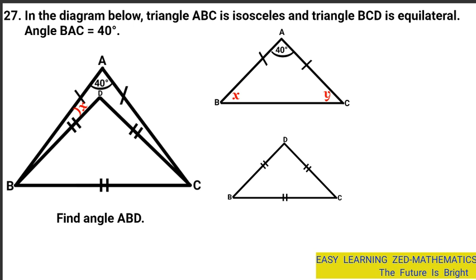In an isosceles triangle, two angles are equal. So in our case, angle X and angle Y are equal. Therefore, we can call them both X. Angle ABC is named X, and angle BCA is also called X because they are equal. Since they have the same name, we can now set up an expression to find their value.